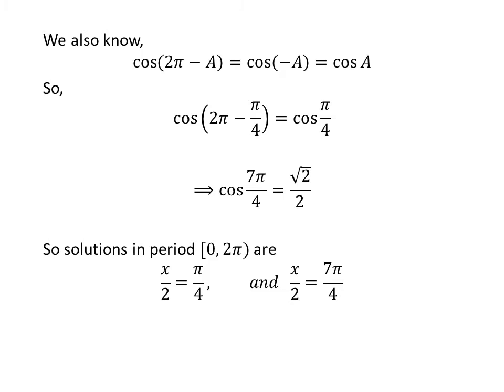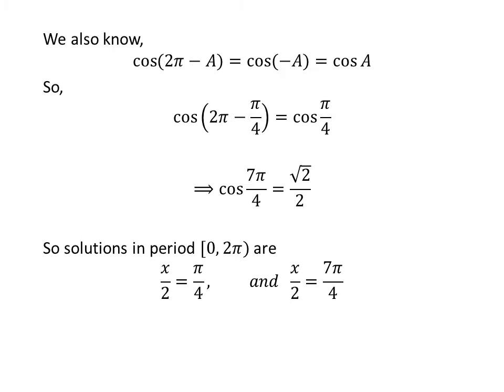So, the solutions for x upon 2 in the interval 0 to 2 times pi are pi upon 4 and 7 times pi upon 4.